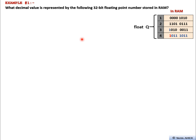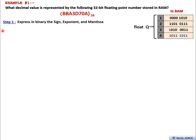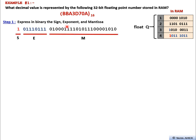Let's start with the first step. We've converted the binary into hexadecimal. Step one is to determine the three parts of the IEEE 754 format: the sign, the exponent, and the mantissa. The sign is 1 bit, the exponent is 8 bits, and the mantissa is 23 bits.